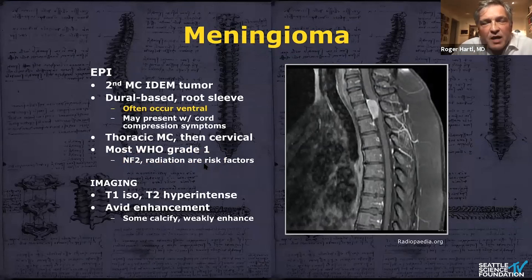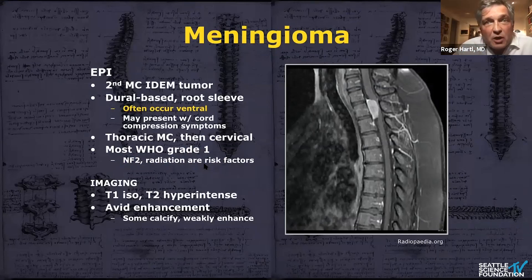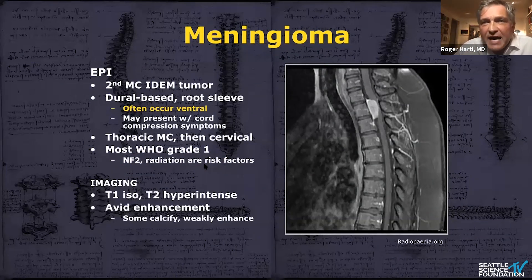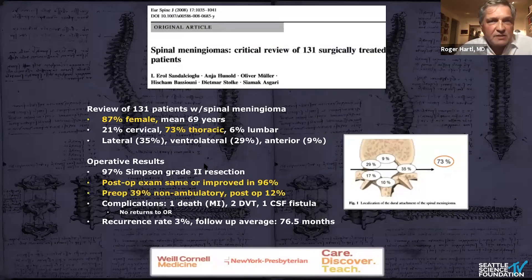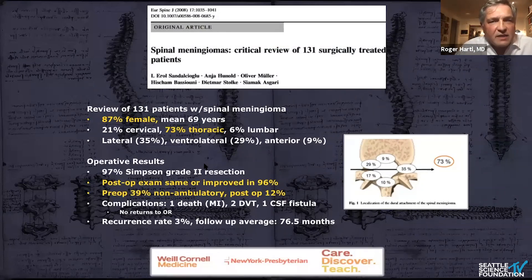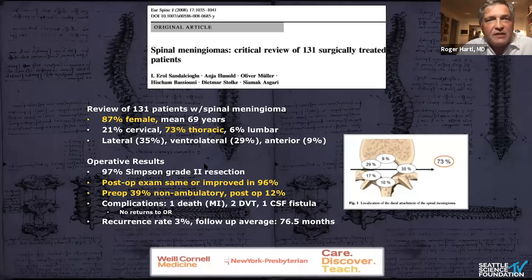Meningiomas are fairly benign lesions, frequently dural-based, anterior or lateral to the spinal cord, and they frequently present with neurological deficits such as myelopathy. They occur more frequently in the thoracic spine, but also in the cervical spine. Once diagnosed and treated surgically, these patients overall do really well. The treatment is surgical — if they get bigger or cause neurological deficits. If they're small and the patient is asymptomatic, we will watch them with serial imaging. In a series of 131 surgically treated meningiomas, the location was more anterior and lateral, patients did really well overall, and neurological deficits after surgery were largely temporary.